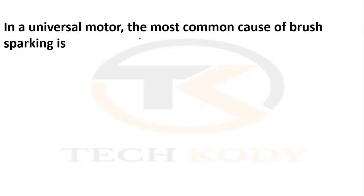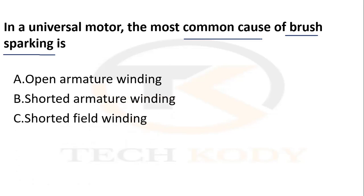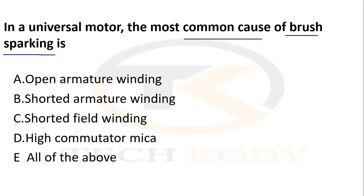In a universal motor, what is the common cause of brush sparking? The options are: open armature winding, short armature winding, short field winding, or high commutator mica. The common causes of brush sparking are short armature winding, short field winding, and high commutator mica.